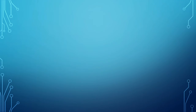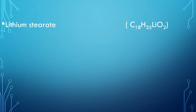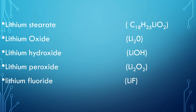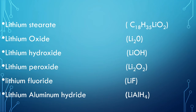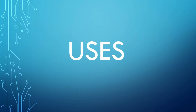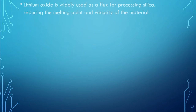Now let's look at some important and interesting compounds of lithium. These include lithium stearate, a chemical compound formally classified as a soap — it is a white, soft solid prepared by the reaction of lithium hydroxide and stearic acid. Other compounds include lithium oxide, lithium hydroxide, lithium peroxide, lithium fluoride, and lithium aluminium hydride.